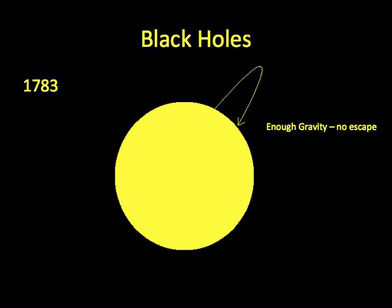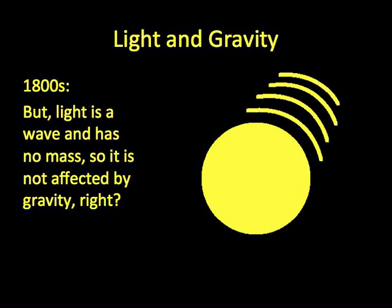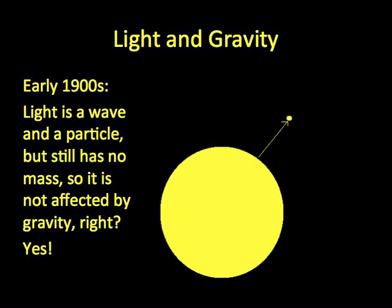But that idea didn't last very long. There was not really much of a way to test it or find out any more about it. And then in the 1800s, they discovered that light was actually a wave. And since it was a wave and had no mass, it was not affected by gravity. Later on, they found that light is a wave and a particle. But since the particle had no mass, it would still not be affected by gravity.